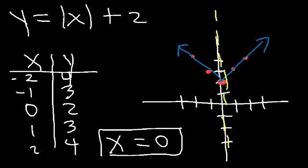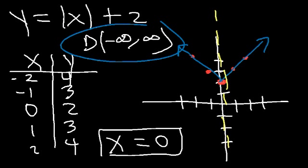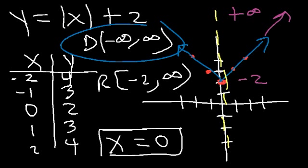Now, what is the domain and range of the function? For an absolute value function, the domain is going to be all real numbers. As long as you don't have any fractions, logarithms, or square roots, the domain will always be all real numbers. For the range, you need to look at the y values from bottom to top. The lowest y value is 2, and this graph keeps going up, so the highest y value is infinity. So it's from 2 to infinity — since it includes 2, you put a bracket next to it. Infinity is always associated with parentheses.